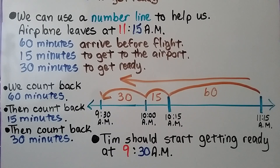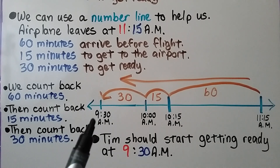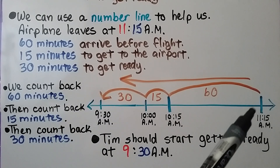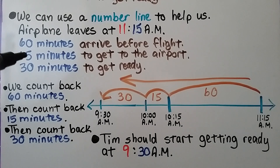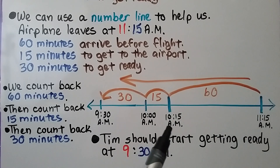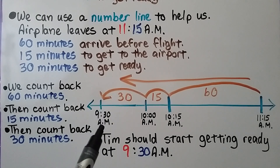We use a number line to help us. The airplane leaves at 11:15 a.m., and we need to find the start time — when Tim gets ready. Our number line starts at 11:15 a.m. and we skip count backwards. Going back 60 minutes (one hour) puts us at 10:15 a.m. Then going back 15 minutes puts us at 10:00 a.m. Then going back 30 more minutes puts us at 9:30 a.m.